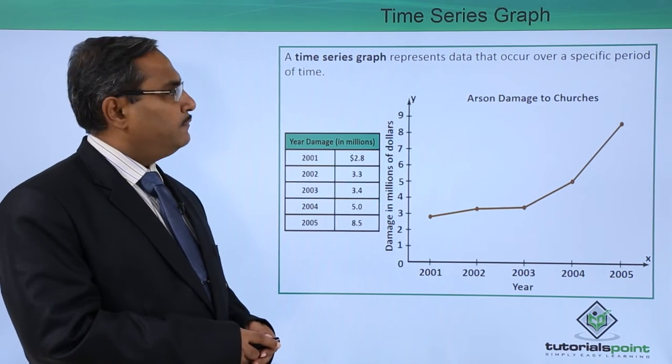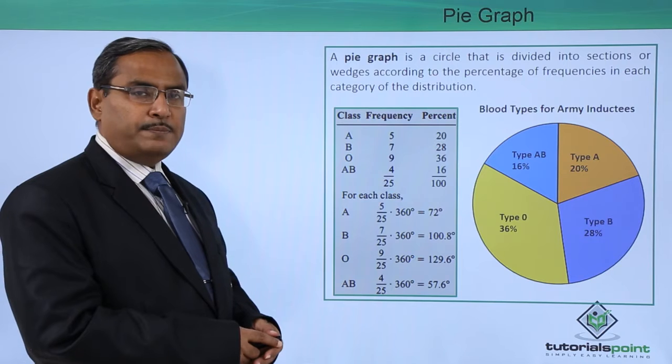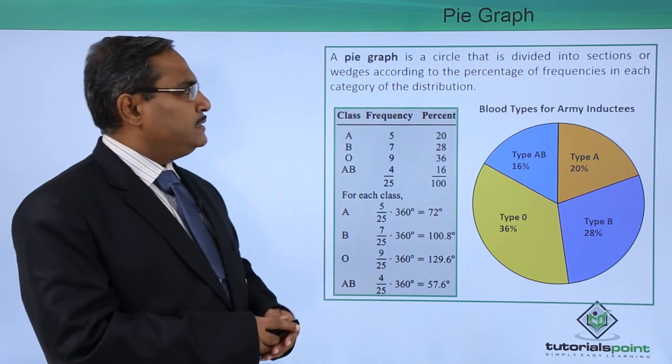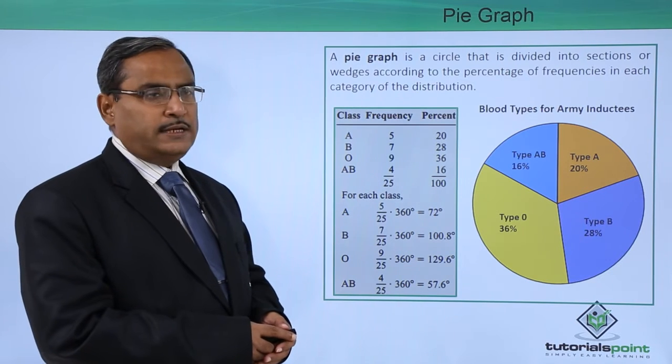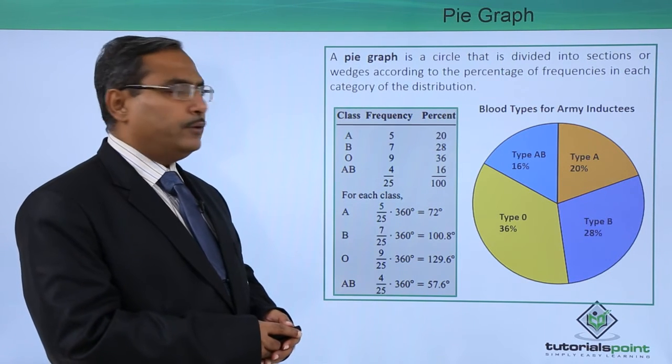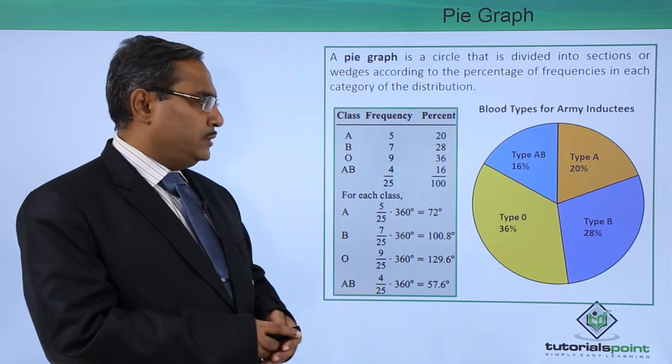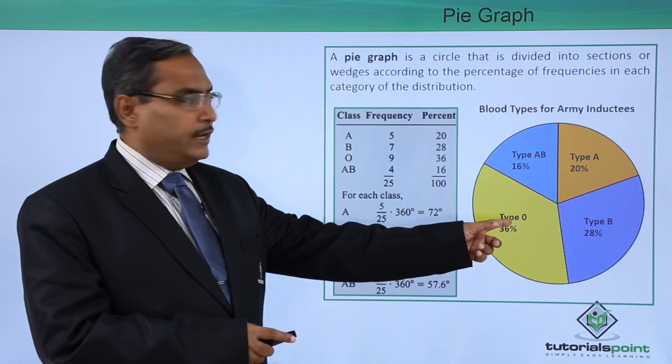Let us go for the last graph type, the pie graph. A pie graph is a circle that is divided into sections or wedges according to the percentage of frequencies in each category of the distribution. You know that this circle is having 360 degrees.